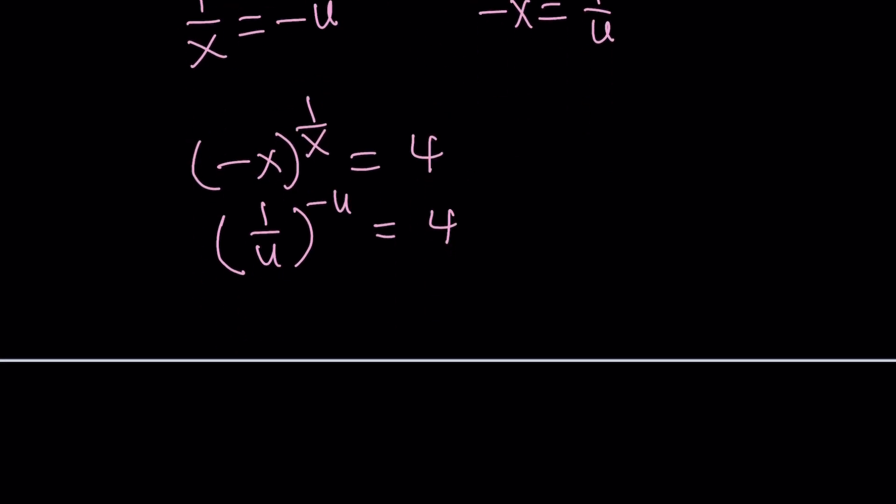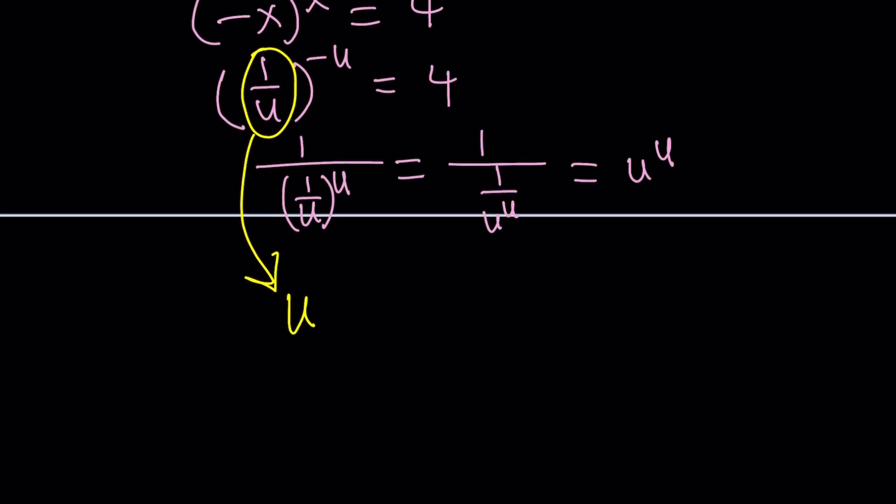This is what I was trying to get because what is a negative exponent? It'll flip. So, 1 over u to the power negative u just means 1 over 1 over u to the power u, which is u to the power u. You can directly do this because the reciprocal of 1 over u is just u. So, this is u to the power u equals 4. This is what I was trying to get, and from here you can immediately say u equals 2.